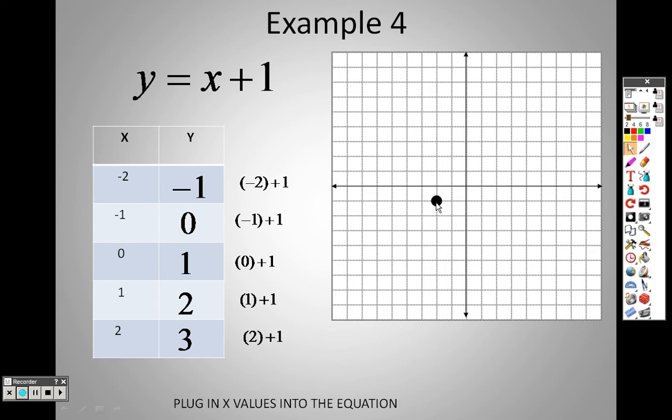Remember, negative means left, or it means down. Positive means right or up. So this is negative 2 and then down 1. Next up is negative 1, 0, which means I move over negative 1 and up nothing. That's the point.